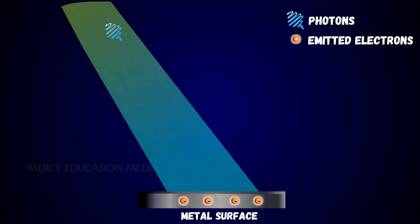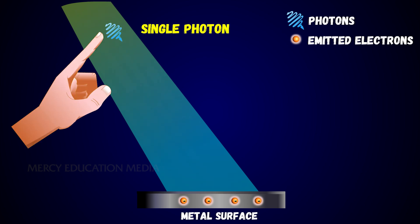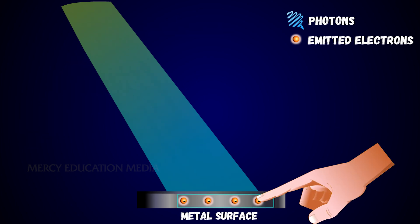According to Einstein, the emission of photoelectrons is the result of the interaction between a single photon of the incident radiation and an electron in the metal.